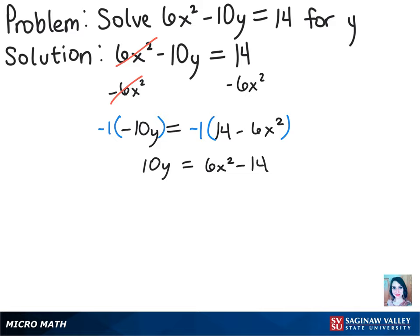Now we can divide both sides by 10 and that will get us y equals 6x squared minus 14 over 10.